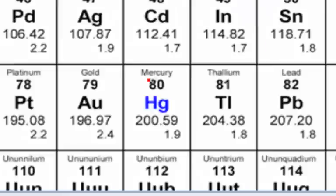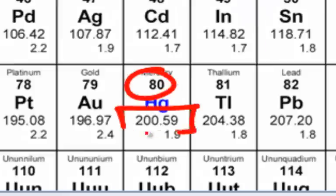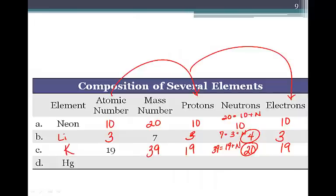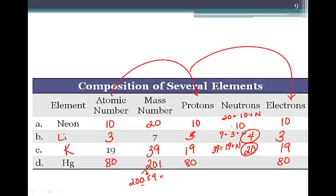Looking at mercury, it has an atomic number of eighty and an atomic mass of 200.59. So mercury has eighty protons and eighty electrons. When we round 200.59 to the nearest whole number, the mass number is 201. To calculate neutrons, we take the mass number of 201 and subtract the number of protons — eighty — giving us one hundred and twenty-one neutrons.